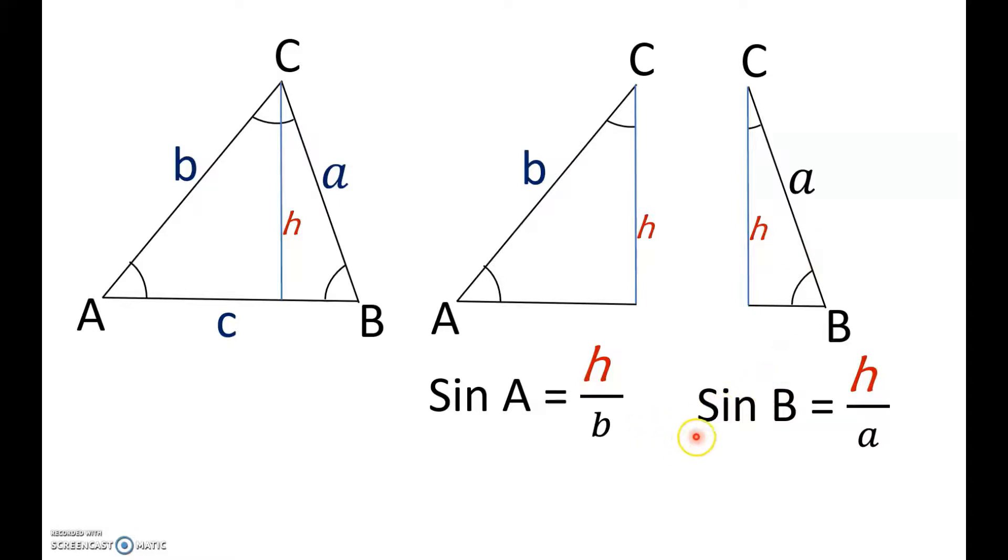Let's further simplify both these equations. Keeping the H and taking the B to the other side, you get B times sine A. And similarly, keep the H here and move the A to the other side. So, it's A times sine B.